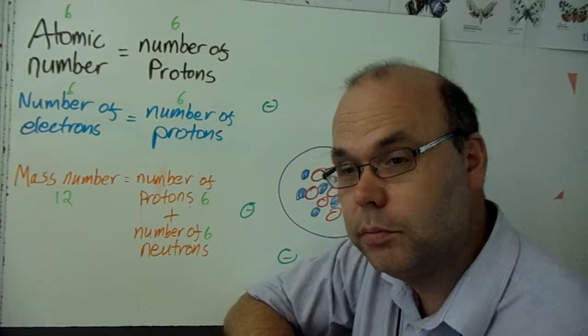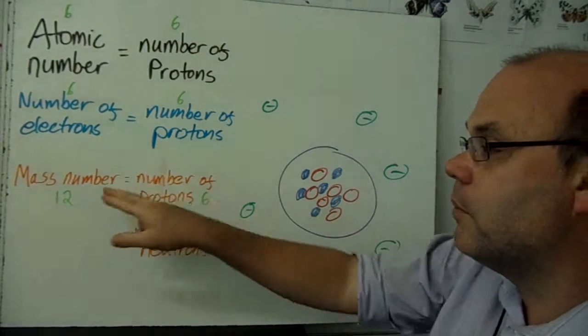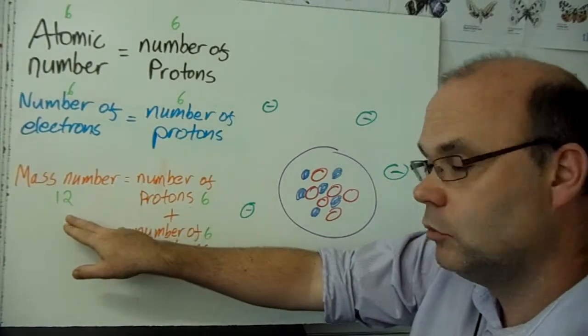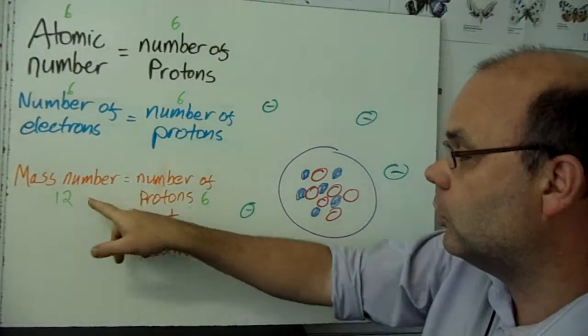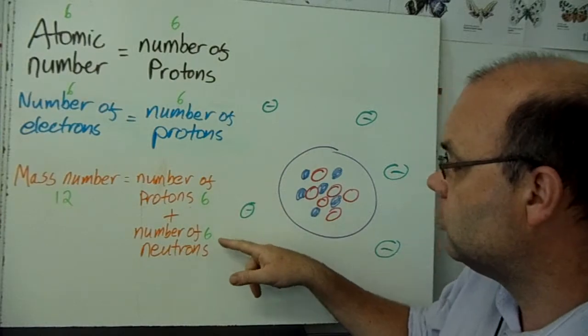You'll learn about that later too. But the mass number of an atom is 12. Of carbon is 12 because it's got six protons and six neutrons.